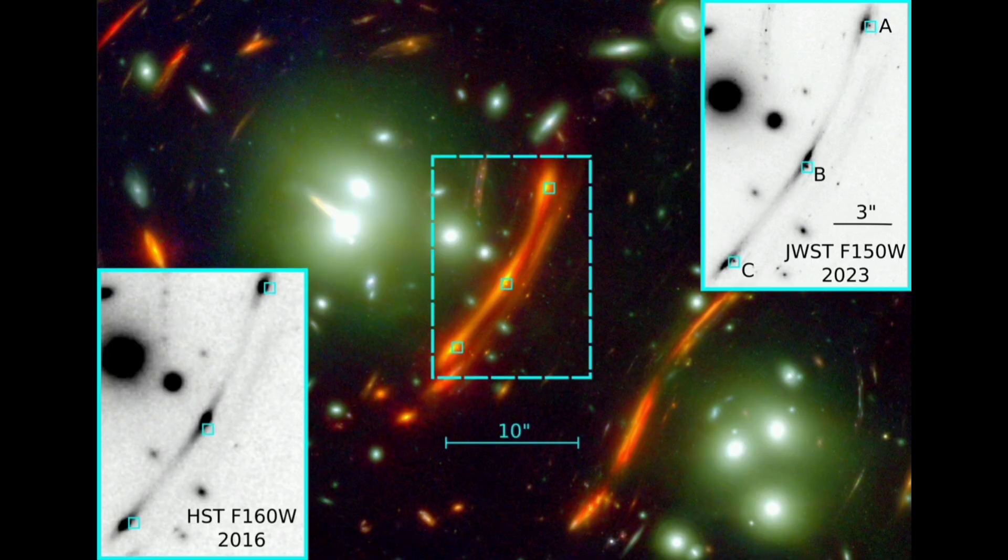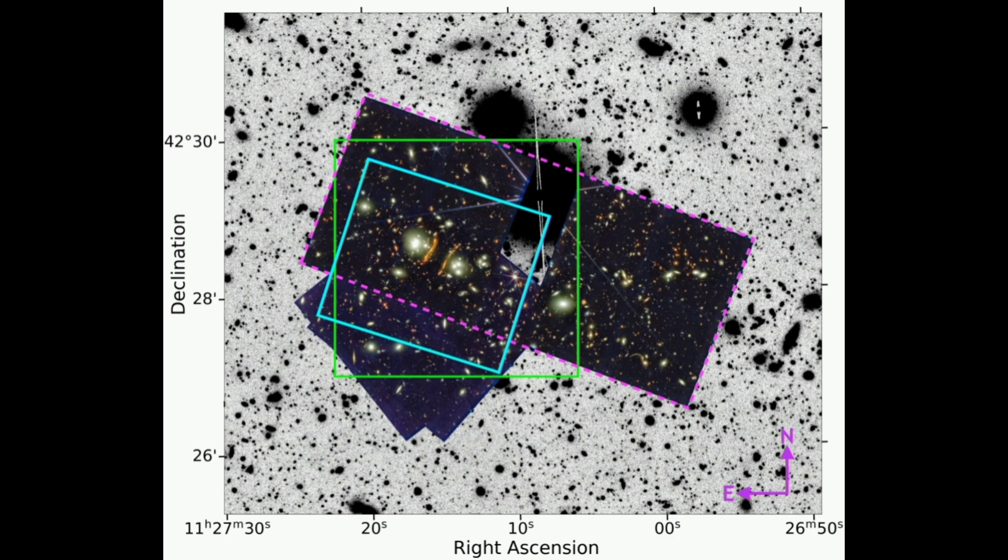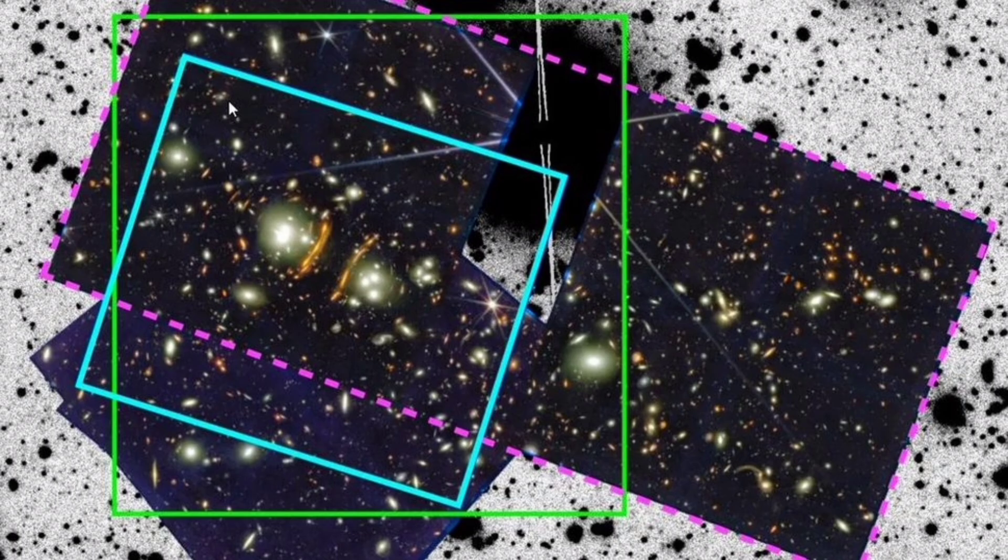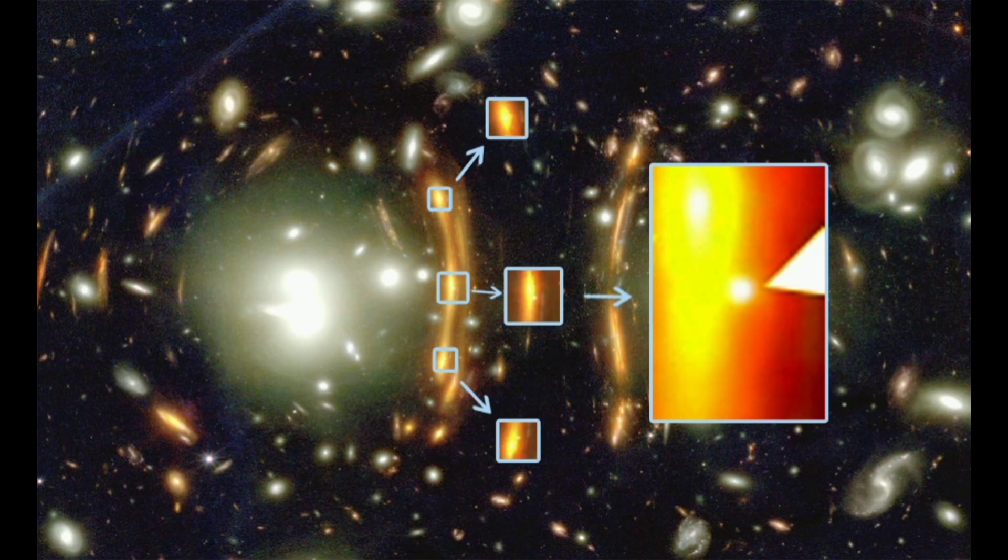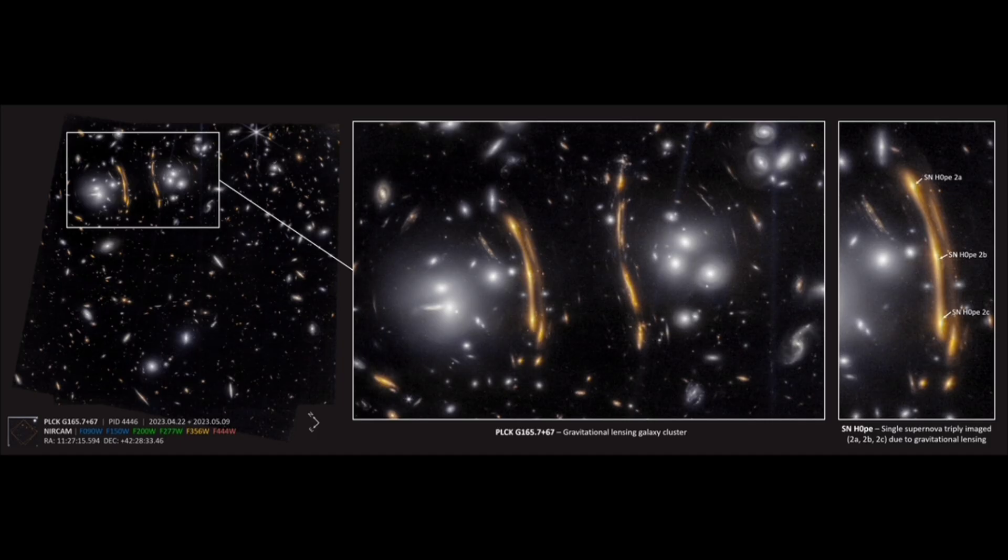Additional information and expanded content: more detailed information can be provided on the different types of supernovae, type Ia, type 2, and the evolution of their explosions. Gravitational lensing can be explained in more detail, and how it is used to study distant galaxies and objects behind gravitational lenses can be described.